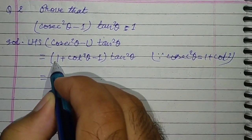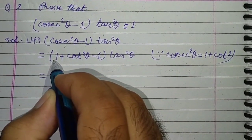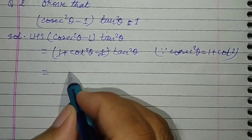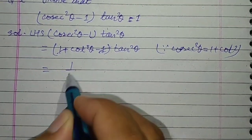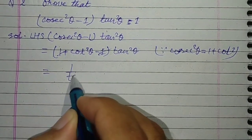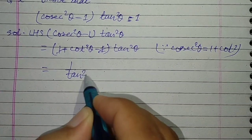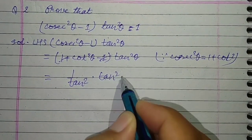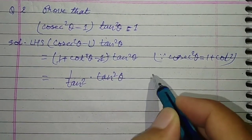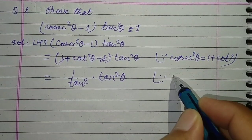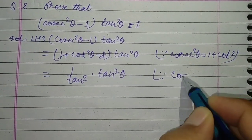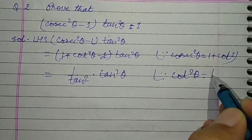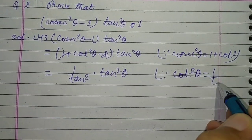We have 1 plus and minus cancel out. cot²θ can be written as 1 by tan²θ, into tan²θ. Hence, cot²θ = 1 by tan²θ.